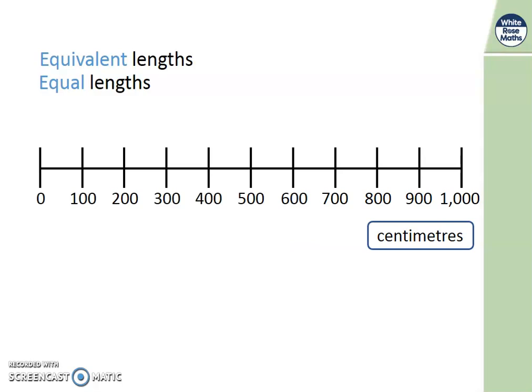And we're going to say that that is measuring in centimetres. Can you remember from yesterday how many centimetres there are in a metre? That's right. There are 100 centimetres in one metre. So on the other side of the number line, we're going to find the equivalent measures in metres. Remembering to start at 0. So at 0 metres, that is 0 centimetres.